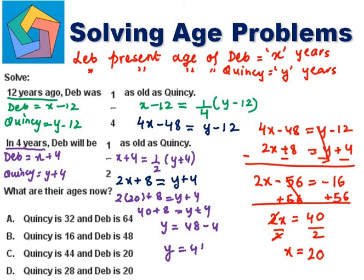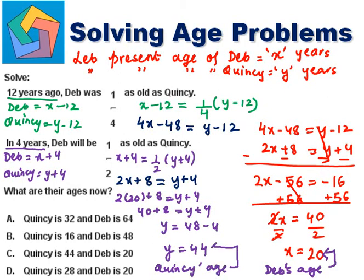So X, meaning Deb's age, is 20 years. And Quincy's age, Y, is 44 years.